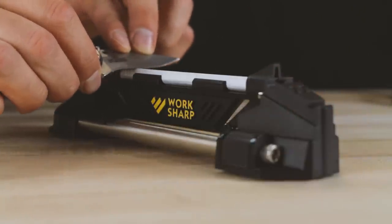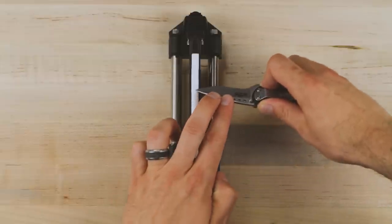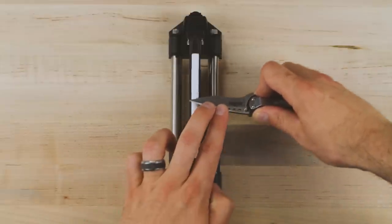Use light pressure and alternating strokes to hone the edge. Lighten pressure as you finish on the ceramic rod, finishing with just the weight of the blade.